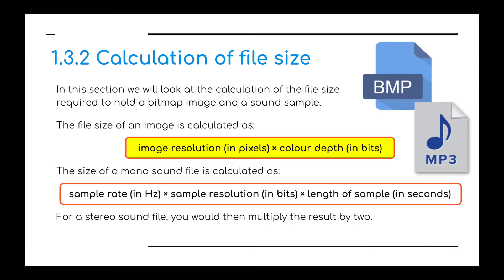For an image, we calculate the size based on the image resolution — the number of pixels, i.e. the pixel matrix (width × height) — multiplied by the colour depth in bits. For a mono sound file, we use the sample rate in hertz multiplied by the sample resolution in bits, multiplied by the length of the sample in seconds. For stereo sound, we multiply the entire result by 2.